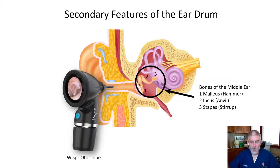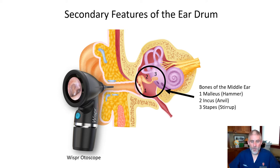Now that we've finished discussing the primary features, let's talk about the secondary features of the eardrum — things you can see in the middle ear because of the translucency of the eardrum. In particular, we'll be looking at the bones of the middle ear: the malleus, the incus, and the stapes, often referred to as the hammer, anvil, and stirrup. Of these bones, you can almost always see the malleus, you can often see the incus, and you rarely if ever see the stapes in a normal healthy ear.